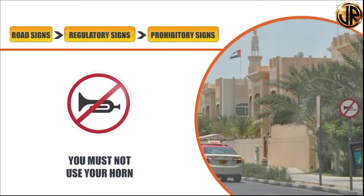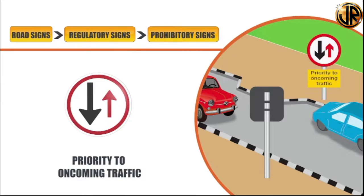The 'no horn' sign means you must not use the horn unless it is very important to avoid danger; it is commonly found near hospitals, worship places, parks, residential and school areas. The 'priority to oncoming traffic' sign means you must give priority to oncoming vehicles. It is mostly used in provisional situations on two-way traffic where your lane is temporarily blocked. The red arrow represents your direction of travel which is blocked, whereas the black arrow represents oncoming traffic. You must stop and give priority to oncoming vehicles; once the oncoming lane is clear, you may use their lane to pass the obstruction.